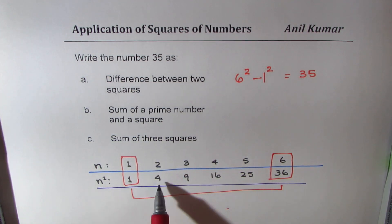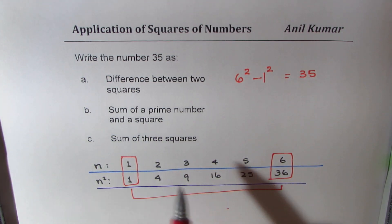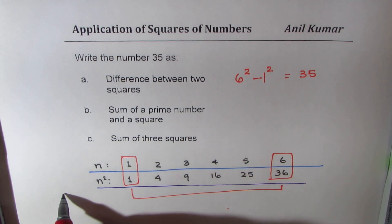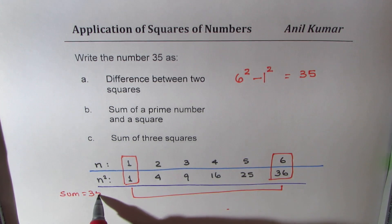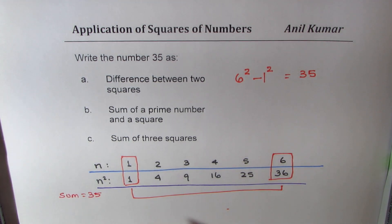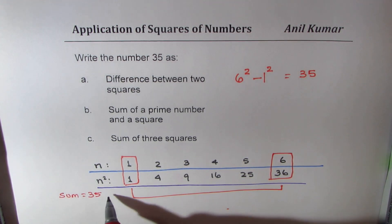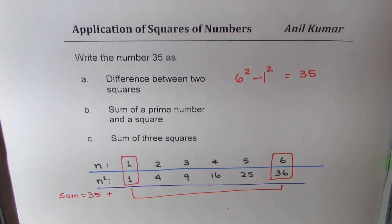What should I add to these to get 35? So, we want sum equals to 35. To make 35, what should I add? What should I add to these numbers? That is what we are looking for.